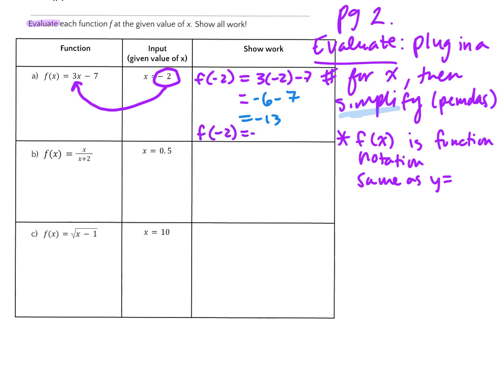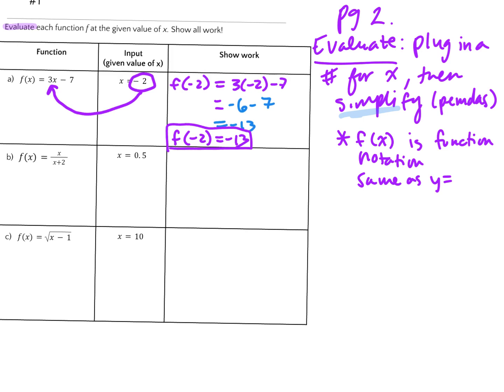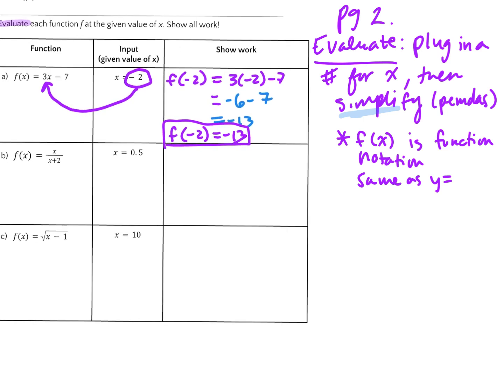So then we're gonna write it as one statement here: f(-2) = -13. Final statement - I like to put a box around math sometimes. So our input is -2 and then our output is -13, so we have an input and an output. So y would equal -13 just for the record.